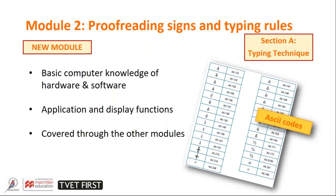In Module 2, the proofreading signs and the typing rules. Those of us who have been in the sector for a long time have been through manuscript signs, manipulation signs, and all the rest of it, and we tend to stick to what we know. Many of us haven't had a look at the updated proofreading signs and typing rules that have been implemented. So we need to make sure that as lecturers we have got this information so that when we teach the subject, we are not teaching archaic or outdated terminology.